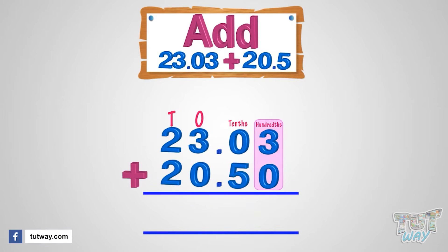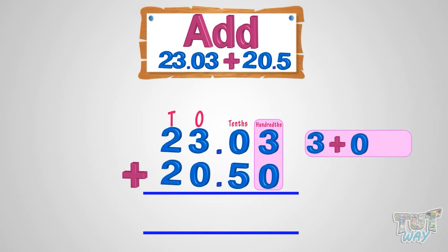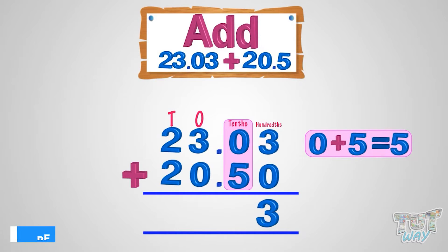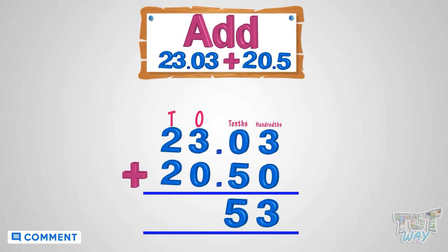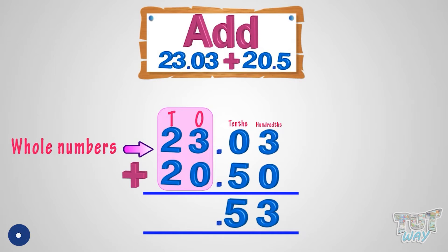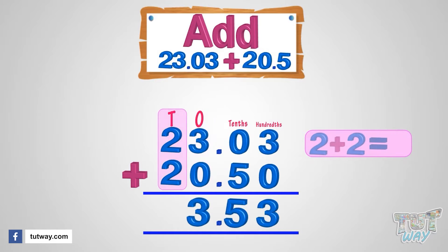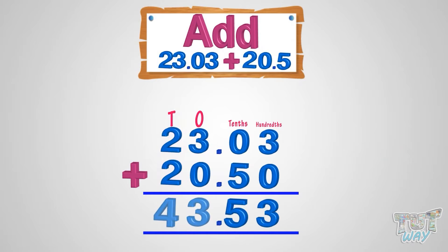Now start adding from the rightmost digit. 3 plus 0 equals 3, so write 3 below the hundredths place in the sum. Now add the tenths place digits: 0 plus 5 equals 5. Write 5 in the sum below the tenths digit. Now put the decimal in the sum. Now add the whole numbers: 3 plus 0 equals 3, and 2 plus 2 equals 4. So our sum is 43.53.